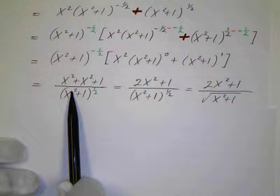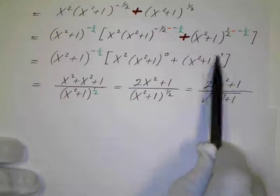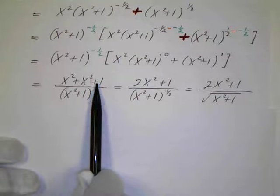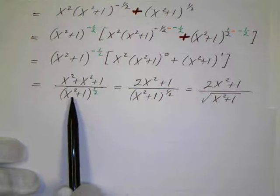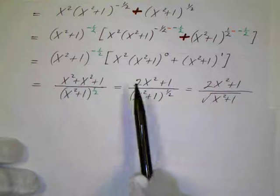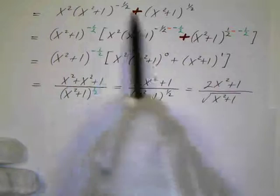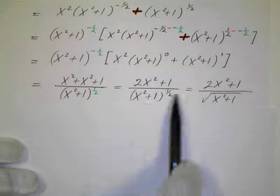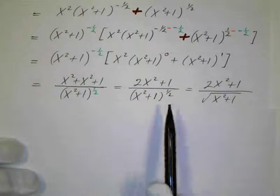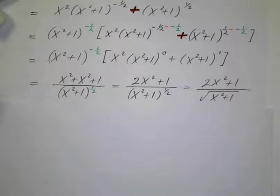This goes in the bottom to make the exponent positive. I've got x squared — anything to the 0 power is 1, so I've got x squared — and anything to the first power is just itself, so x squared plus 1. This simplifies to x squared plus x squared plus 1, all over x squared plus 1 to the 1 half. Then x squared plus x squared plus 1 is 2x squared plus 1, all over this. This is shorter and more compact than the previous answer, which had two terms with positive and negative exponents. This has just one big fraction with all positive exponents, and we could write it back in radical form if we want.